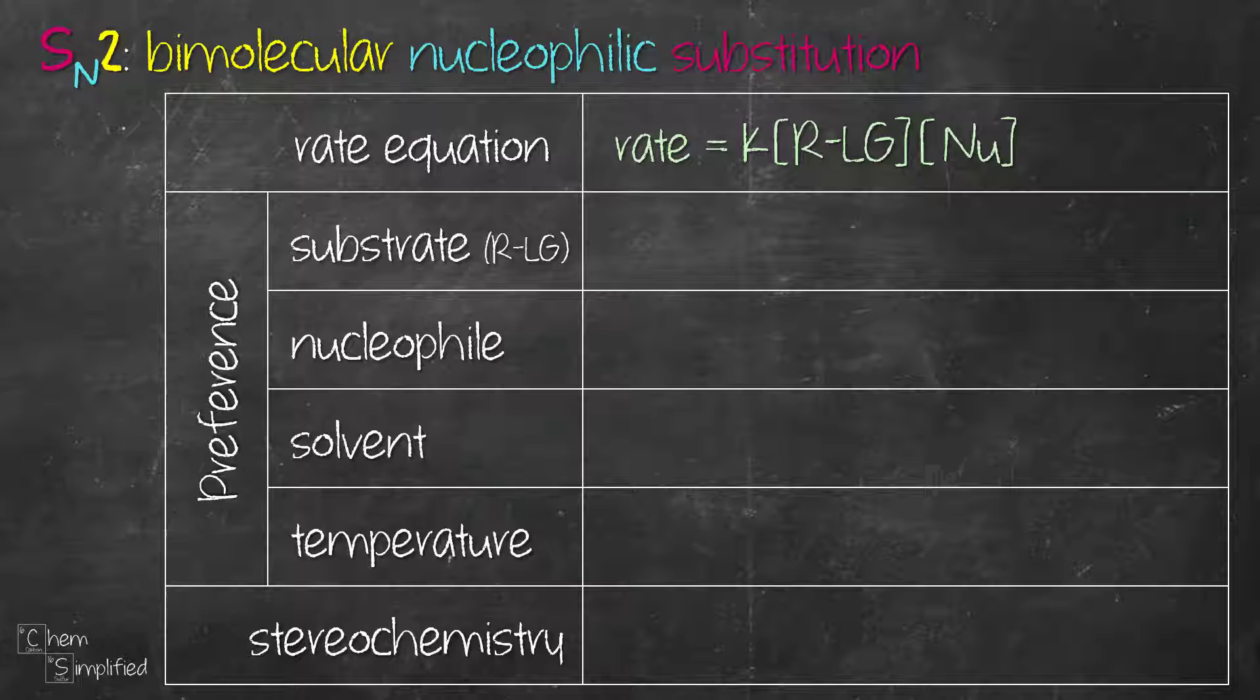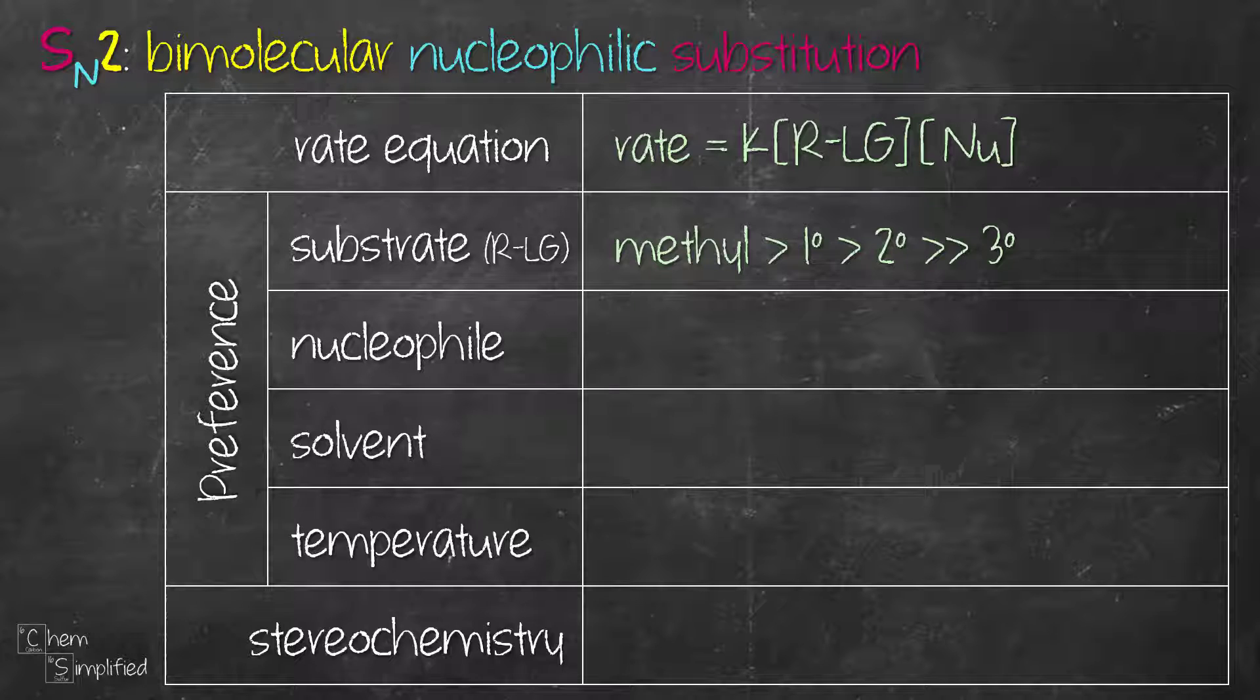Now let's look at the factors that will favor SN2 reaction. The reaction rate of SN2 is fastest for small alkyl halides. That means methyl substrate is the most preferred followed by primary and secondary substrates. The reaction doesn't proceed at all with a tertiary substrate, so keep that in mind.